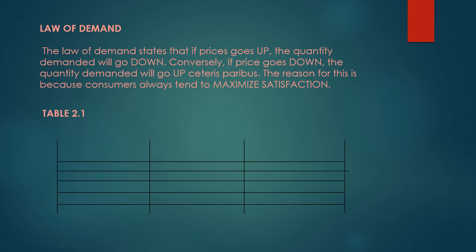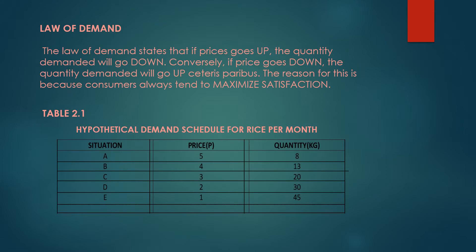We have here Table 2.1 — a hypothetical demand schedule for rice per month. We have situations A, B, C, D, and E. For the price: A is 5, B is 4, C is 3, D is 2, and E is 1.